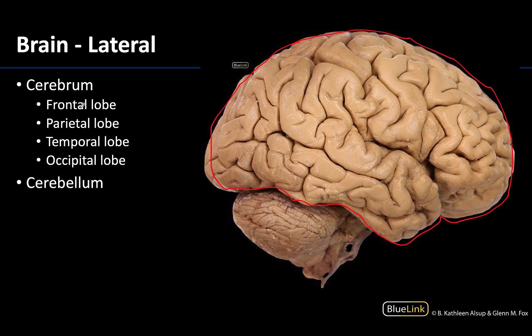The hemispheres will be further subdivided into cerebral lobes, which are used for descriptive purposes. While they are named after bones, they do not correspond precisely with their similarly named bone, so as long as you understand the general areas of the lobes we will be happy. The frontal lobe is going to be the most anterior. The parietal lobe will be kind of intermediate and superior. The occipital lobe will be posterior, and the temporal lobes will be more inferiorly located on the cerebrum, below this lateral sulcus.